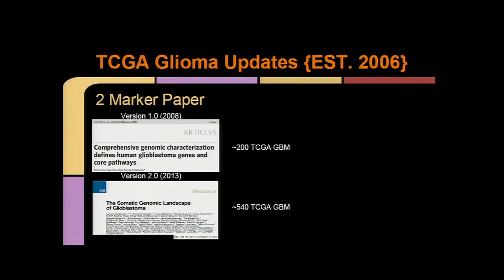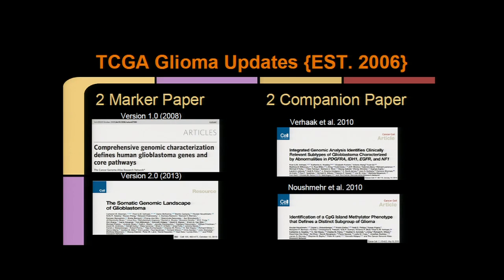Since 2006, TCGA started with three primary pilot tumor studies, GBM being one of them. GBM was actually one of the first marker papers that came out of our group — I'm calling this version 1.0. Subsequently in 2013, Cameron Brennan, Roverhawk, and others published the second marker paper, version 2.0, with an expanded TCGA set. In between, we published two companion papers looking at gene expression profiling for GBMs as well as DNA methylation profiling, where we identified a very specific, unique subtype which we termed G-SIMP.